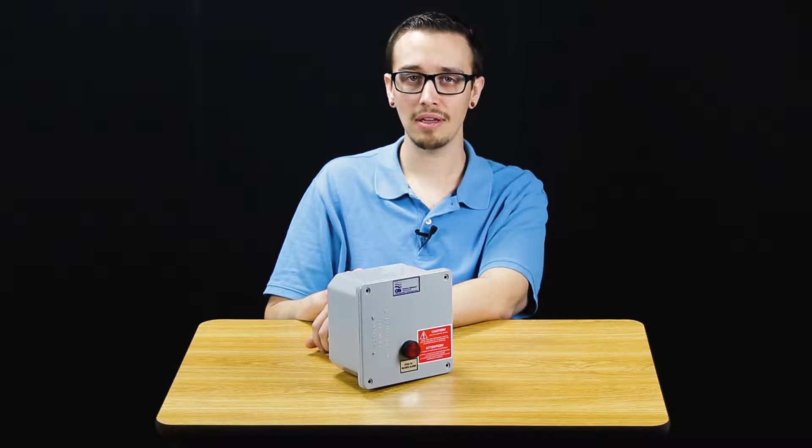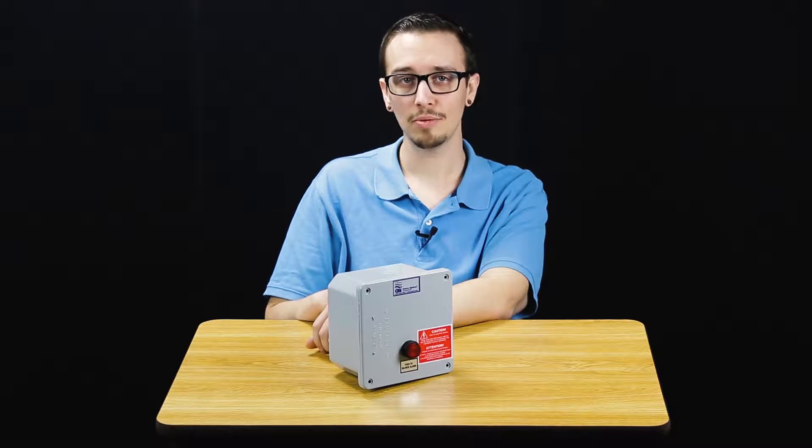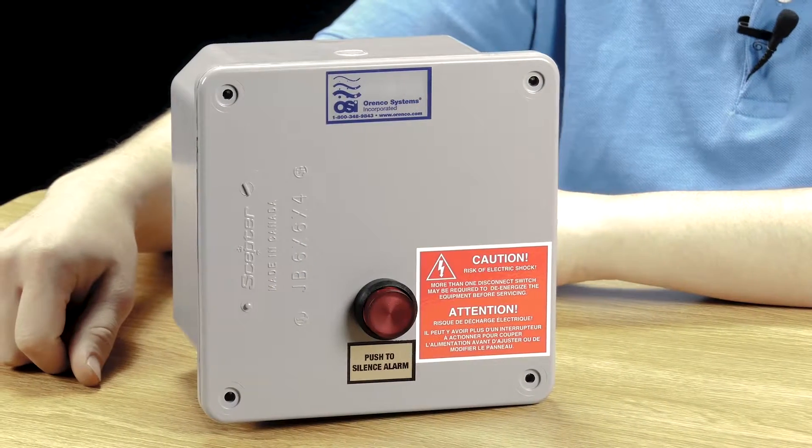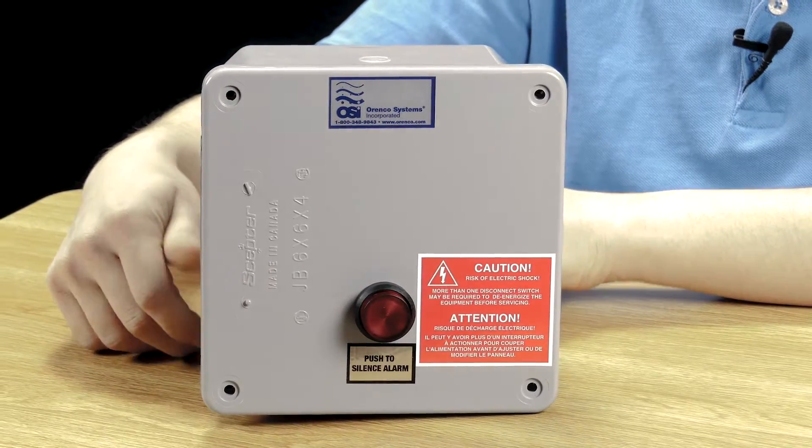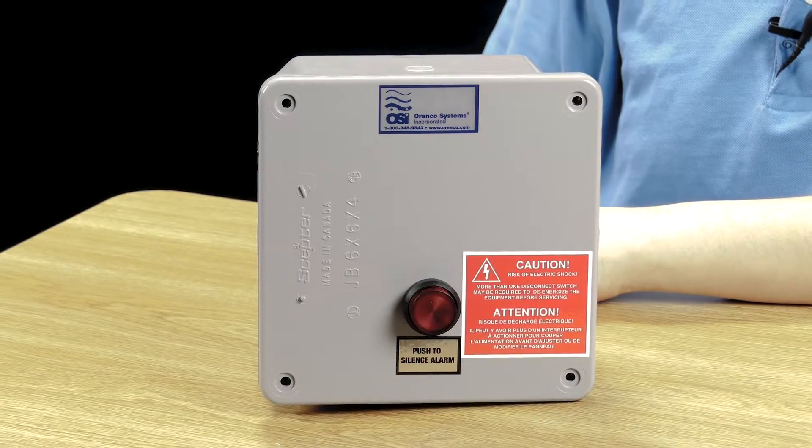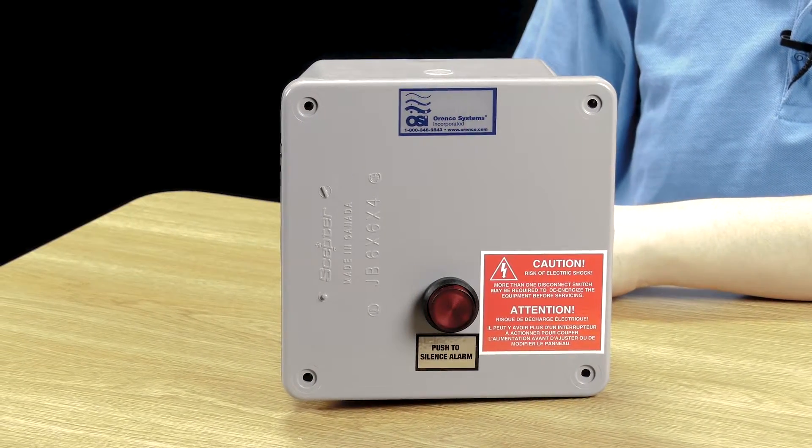The Aranco AM AHW high liquid level alarm panels are used indoors or outdoors as a standalone alarm in conjunction with a single float switch for indicating high liquid level or low liquid level conditions.